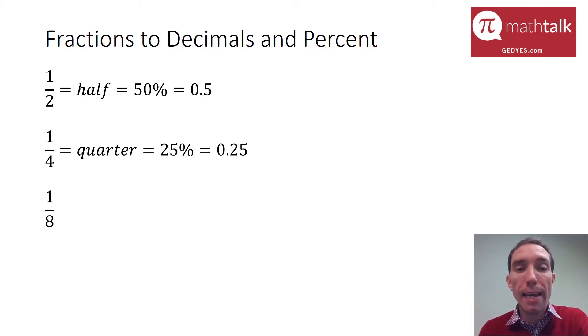An eighth is a little bit different, but I know that an eighth is really just the same thing as half of a quarter. So if I know what a quarter is, I can just take that 25 and then divide it by two, cut it in half, and I get 12.5% or 0.125.